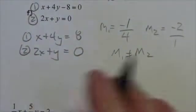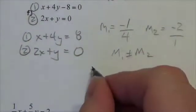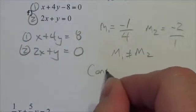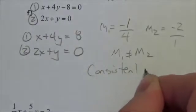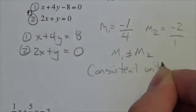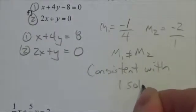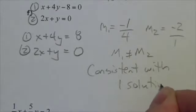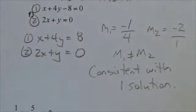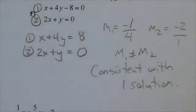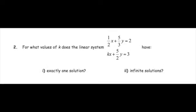For the last system, equation two is written in a form that isn't easy to compare directly, so rewrite equation one as x + 4y = −8. The slope of line one is −1/4. The slope of equation two is −2/1. Those two slopes are not the same, so immediately we know this is going to be consistent with one solution.